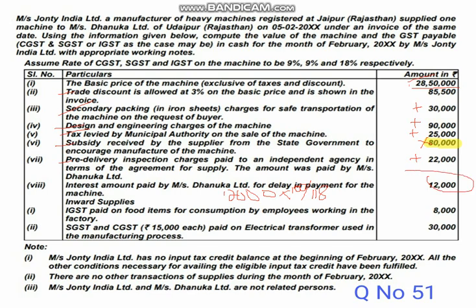IGST paid on food consumption by employees working in the factory — don't take this one, because it is a consumption. SGST and CGST of 15,000 each paid on electrical transformers reused in the manufacturing process — this was already paid, meaning you have the input tax credit of this. You have credit of 15,000 each for SGST and CGST — that you have to subtract in the payment of tax.